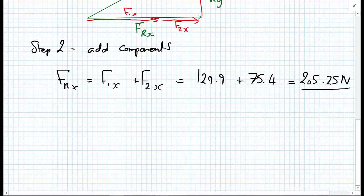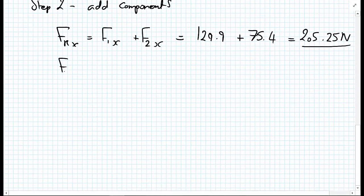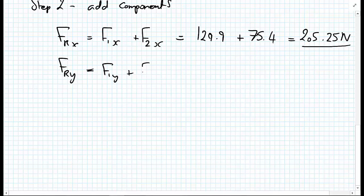Same for the Y direction now. We get FR in the Y direction is equal to F1y plus F2y, which equals 75 plus minus 20.2, which equals 54.81 newtons.